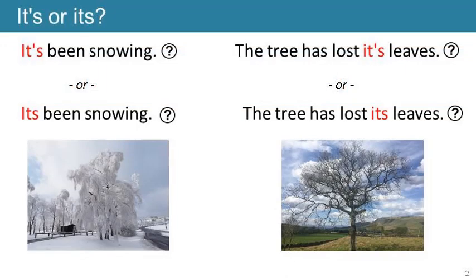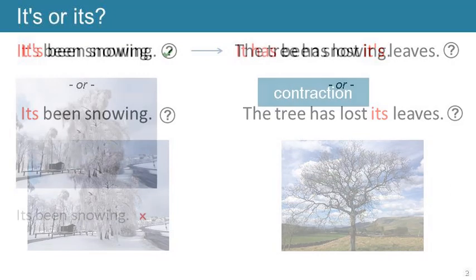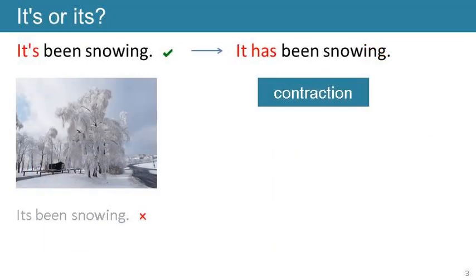The first problem is the correct choice of the little word 'its'. Should it be 'it's' with an apostrophe or 'its' without an apostrophe? This may be the most misspelled word in the English language — certainly the most common misspelled word seen in comments sections. The first mistake is omitting the apostrophe when the word is a contraction of 'it is' or 'it has'. The 'it's' in 'it's been snowing' is a contraction of 'it has been snowing', so it needs an apostrophe.